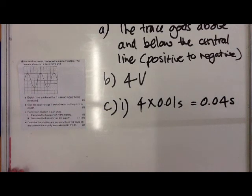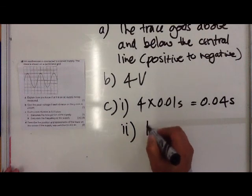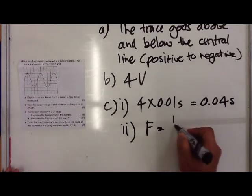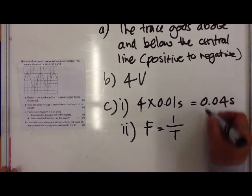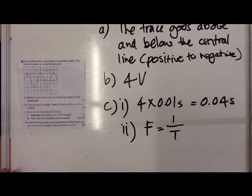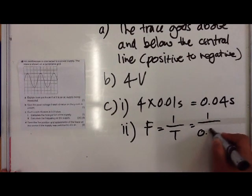(c2) says calculate the frequency of the supply. Now we need to remember the equation for calculating frequency: f = 1/T (frequency equals one over time period). We know our time period is 0.04 seconds, so that equals 1/0.04 seconds, which gives us an answer of 25 Hz.